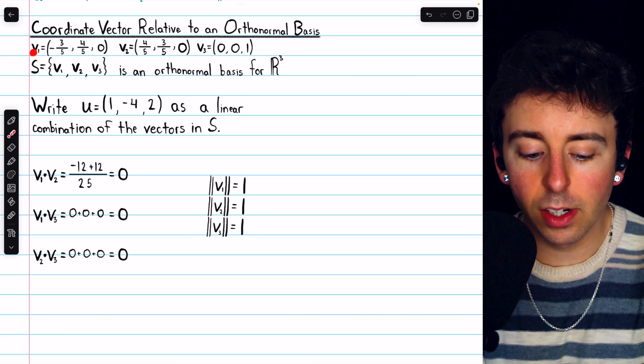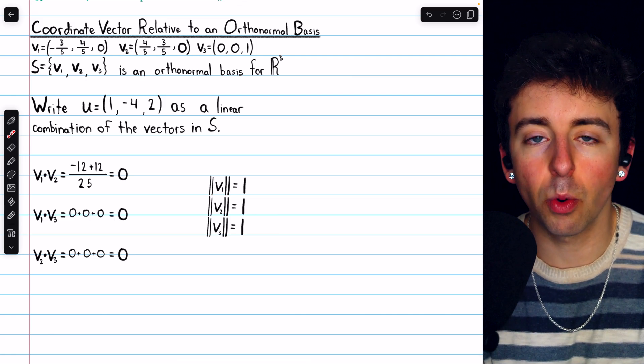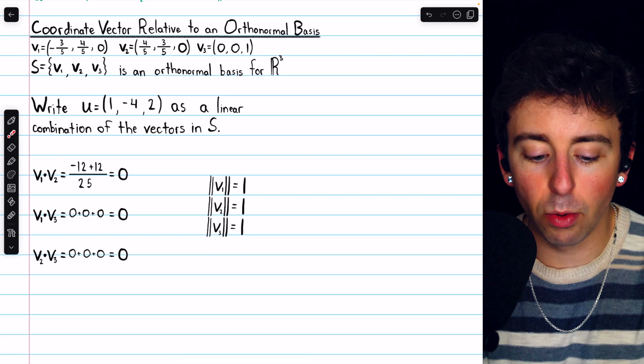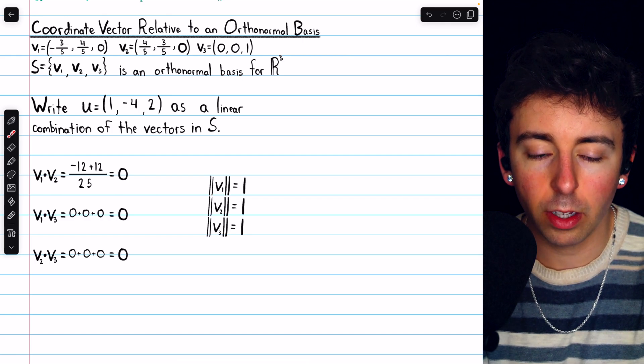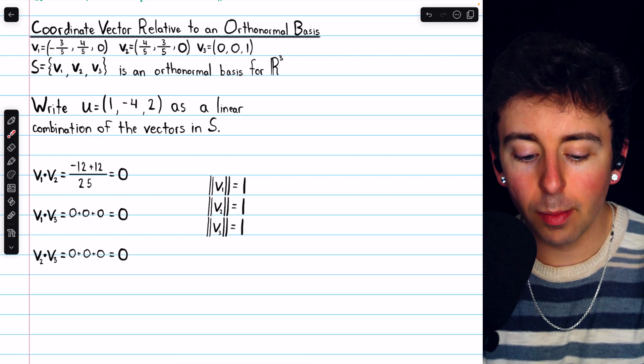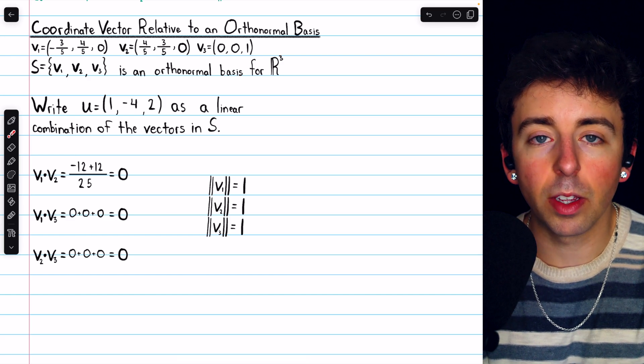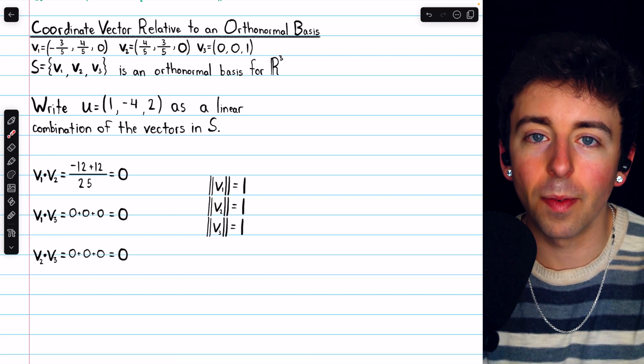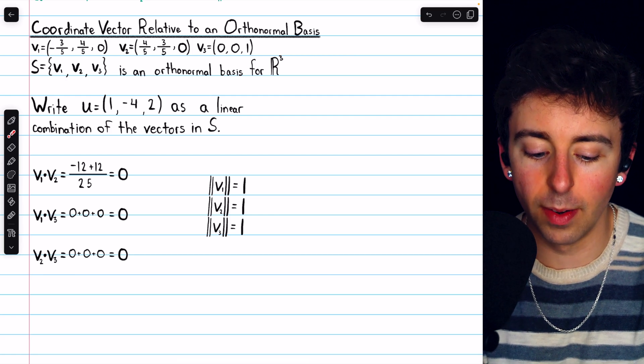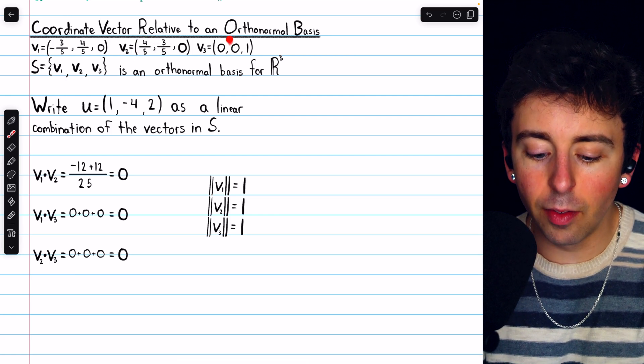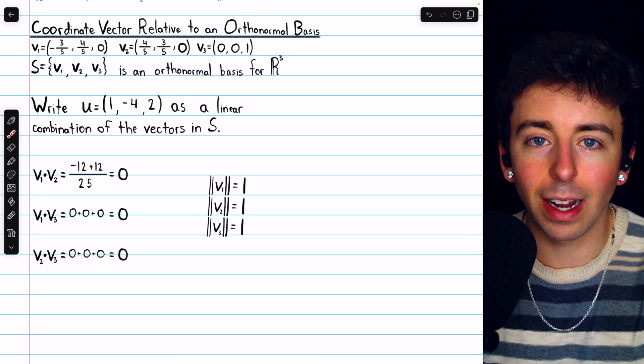For example, the norm of v1 is the square root of the sum of the squares of its components. That would be negative three-fifths squared, which is 9 over 25, plus four-fifths squared, which is 16 over 25. That's 25 over 25, which is 1, and the square root is 1.